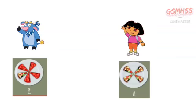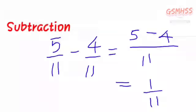Now, let us subtract. Bernu have 5 of 11 pizza. Dora take 4 pizza from Bernu. How many pizza remaining does Bernu have? So, 5 by 11 minus 4 by 11.